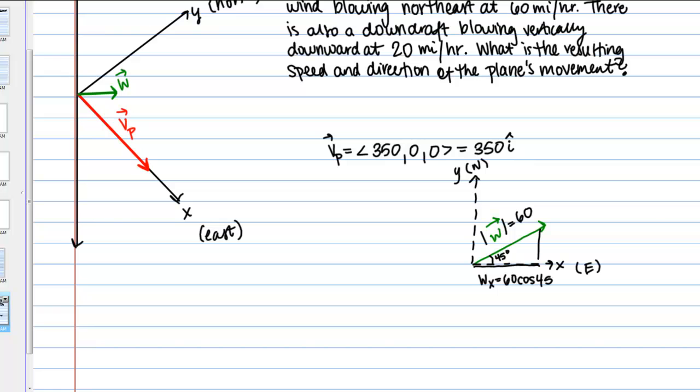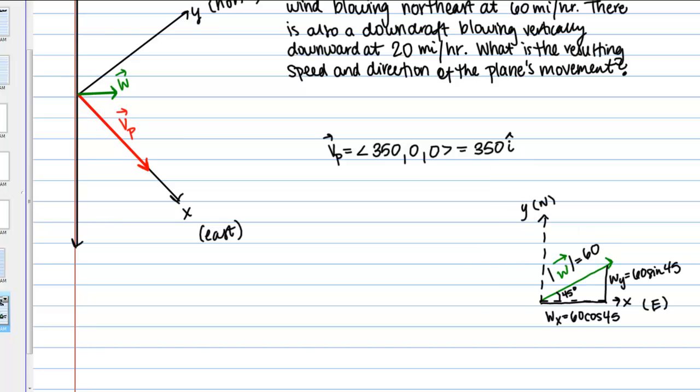Now the Y component, we'll do a similar thing. It's going to be the magnitude 60 times the sine of 45. Now we know the X and Y components of our vector. I can now write vector W as an X component of 60 cosine 45, a Y component of 60 sine 45, and then a Z component of 0 since we're still on the horizontal plane. Or once again, I could write that in terms of I and J if I want. It would be 60 cosine 45 I plus 60 sine 45 J.